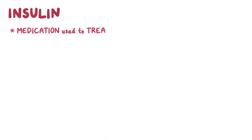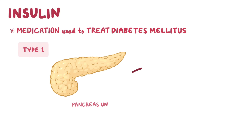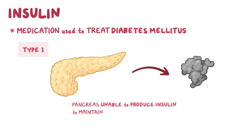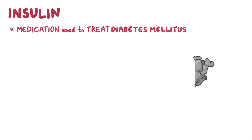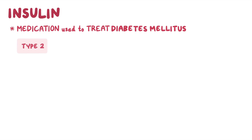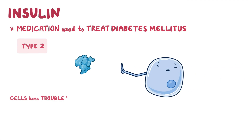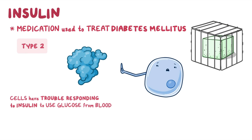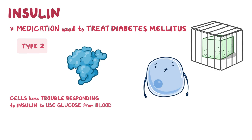Insulin is a medication used to treat clients with diabetes mellitus. There are two main types: type 1 diabetes mellitus, where the pancreas is unable to produce insulin, and type 2 diabetes mellitus, characterized by insulin resistance, where tissue cells have trouble responding to insulin to use glucose from the blood. As a result, tissue cells starve for energy despite having high blood glucose levels, which is called hyperglycemia.